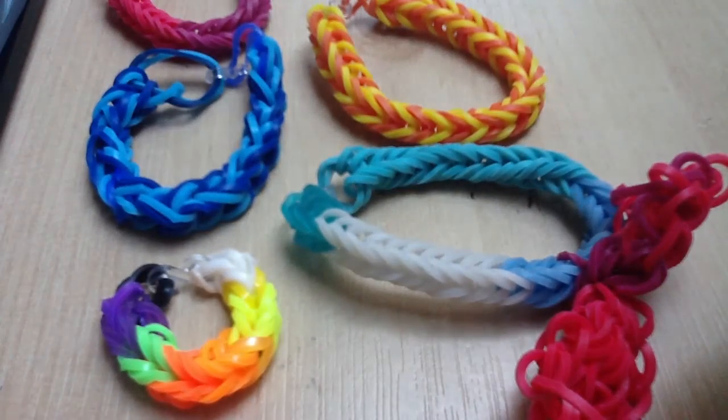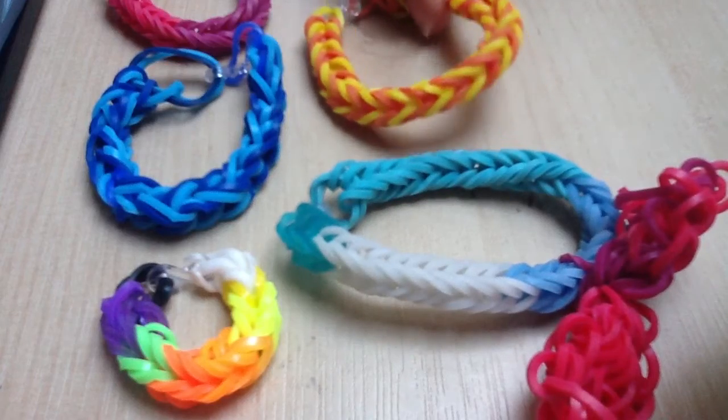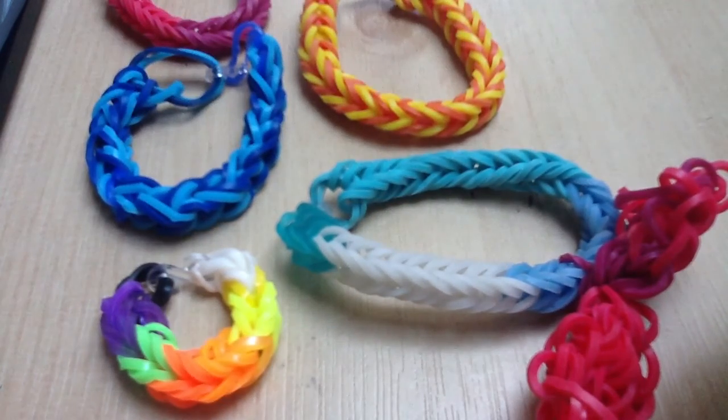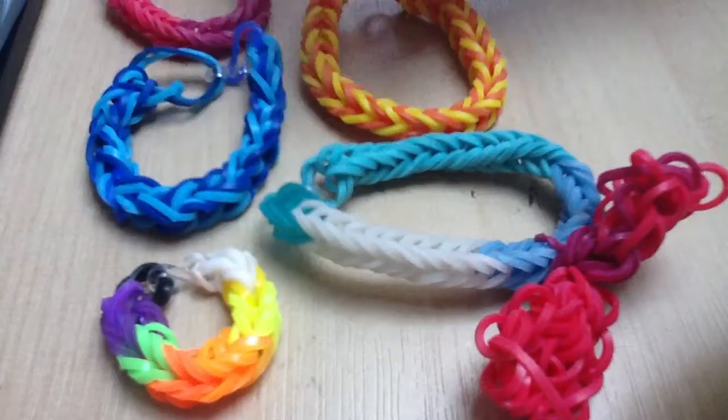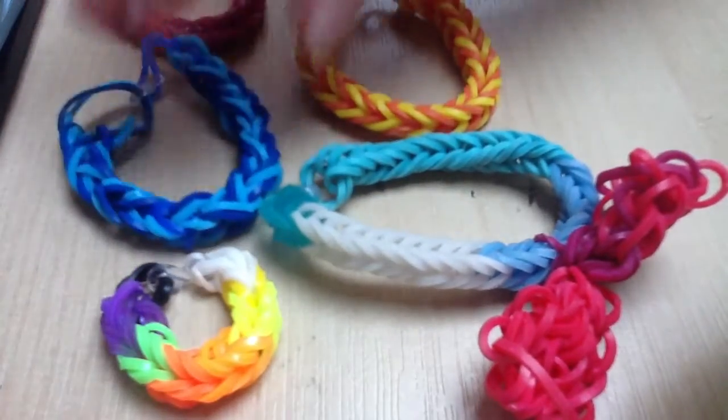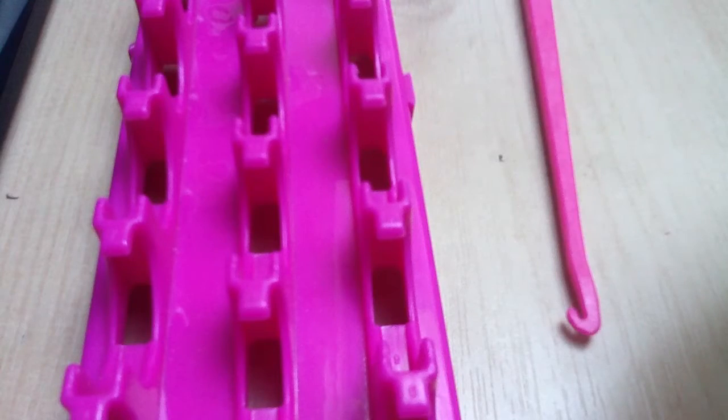Hey guys, this is another Rainbow Loom or Crazy Loom tutorial to make the fishtail bracelet. I really like these because they're a lot thicker than single loop and look slightly better. This bow is quite optional and you can make a two-color one.